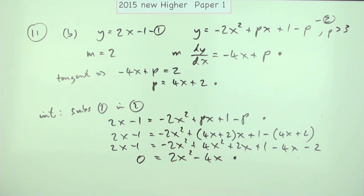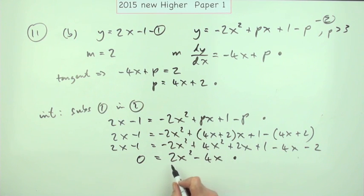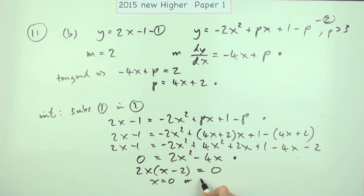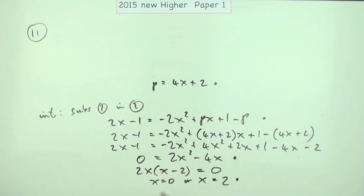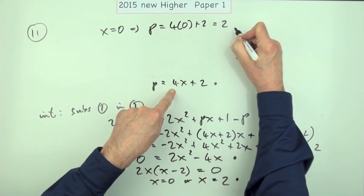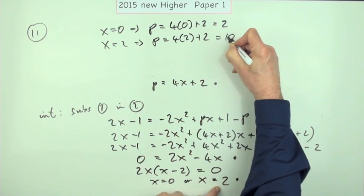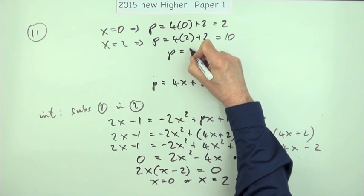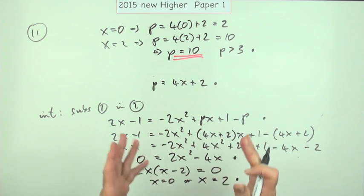Solving 0 equals 2x squared minus 4x: take out a common factor of 2x to get 2x times x minus 2 equals 0, giving x equals 0 or x equals 2. That was a mark. Now use p equals 4x plus 2: when x equals 0, p equals 2 — no use. When x equals 2, p equals 4 times 2 plus 2 equals 10. Since p must be greater than 3, the answer is p equals 10. That was the final sixth mark using this alternative method.